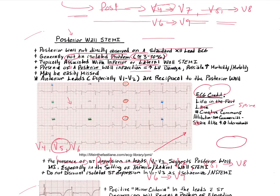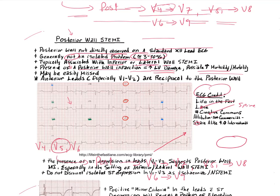If a posterior wall infarction is present, that means more damage to the left ventricle, potentially increasing morbidity and mortality. The leads reciprocal to the posterior wall are the anterior leads — V1 through V3 look out toward the anterior wall, and directly behind them is the posterior wall. So leads V1 through V3 are going to be very important to examine.